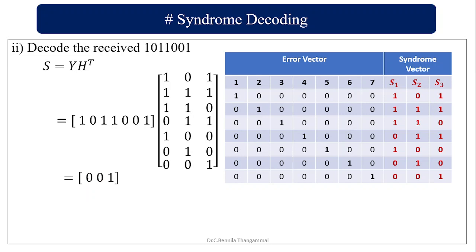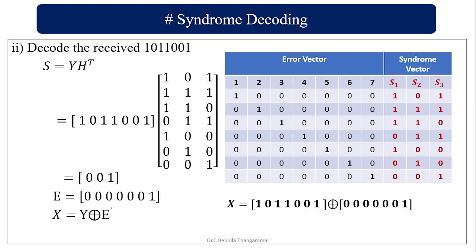Syndrome [0, 0, 1] is matched in the decoding table — it corresponds to a seventh bit error. So the error pattern E is [0, 0, 0, 0, 0, 0, 1]. To find the corrected codeword, compute X = Y modulo-2 plus E: [1,0,1,1,0,0,1] plus [0,0,0,0,0,0,1] gives [1, 0, 1, 1, 0, 0, 0]. The error in the seventh bit has been corrected, and this is the corrected codeword.